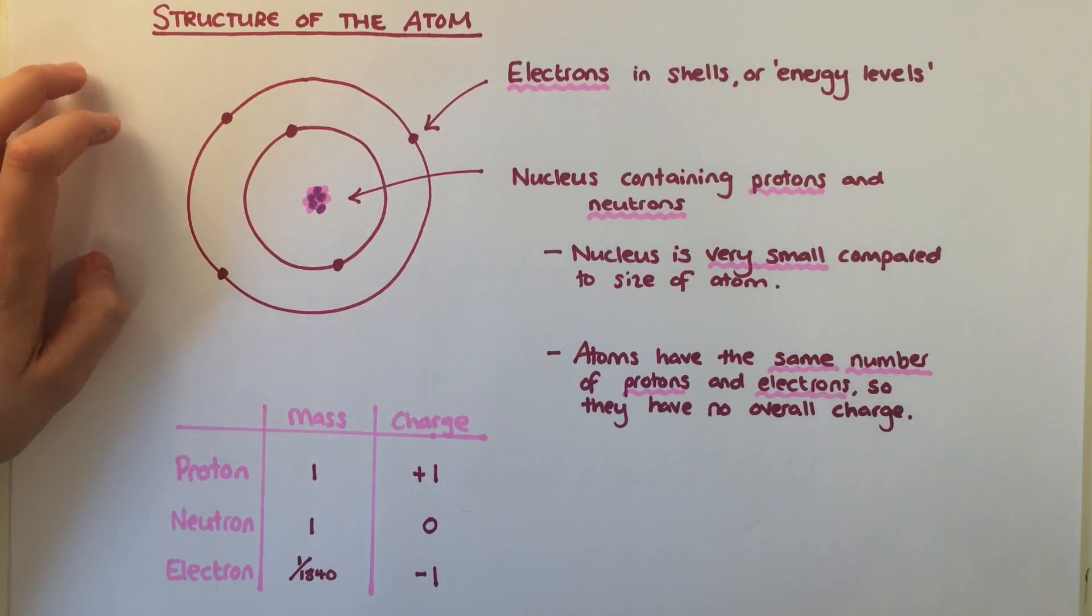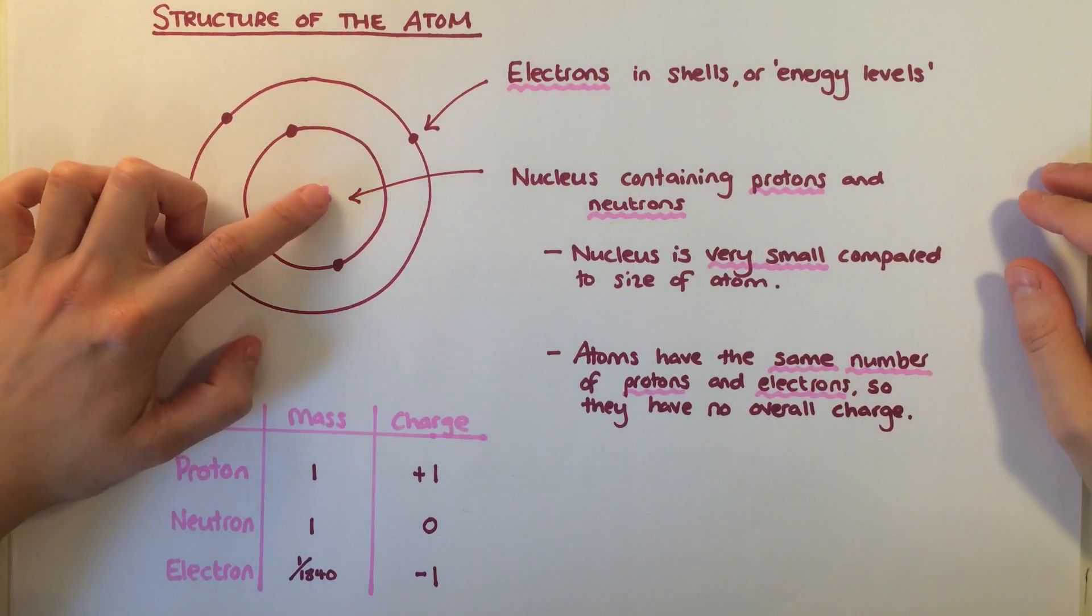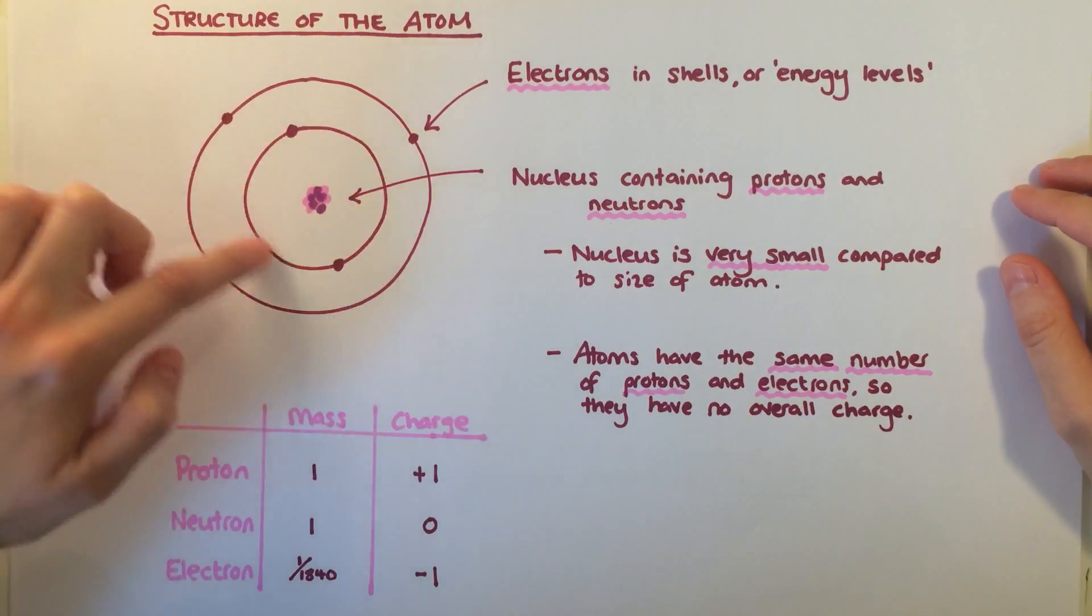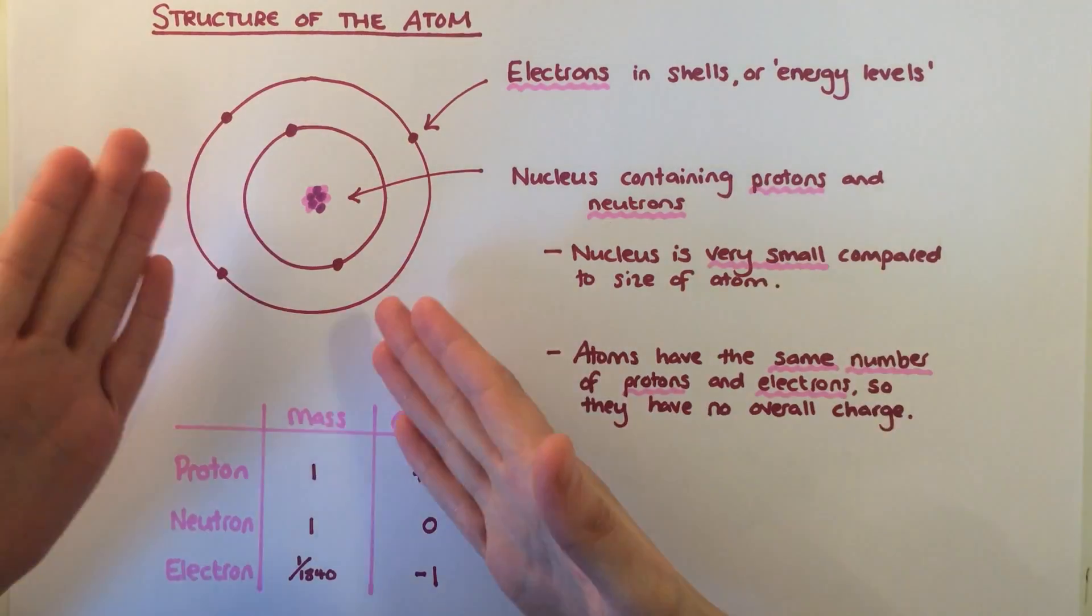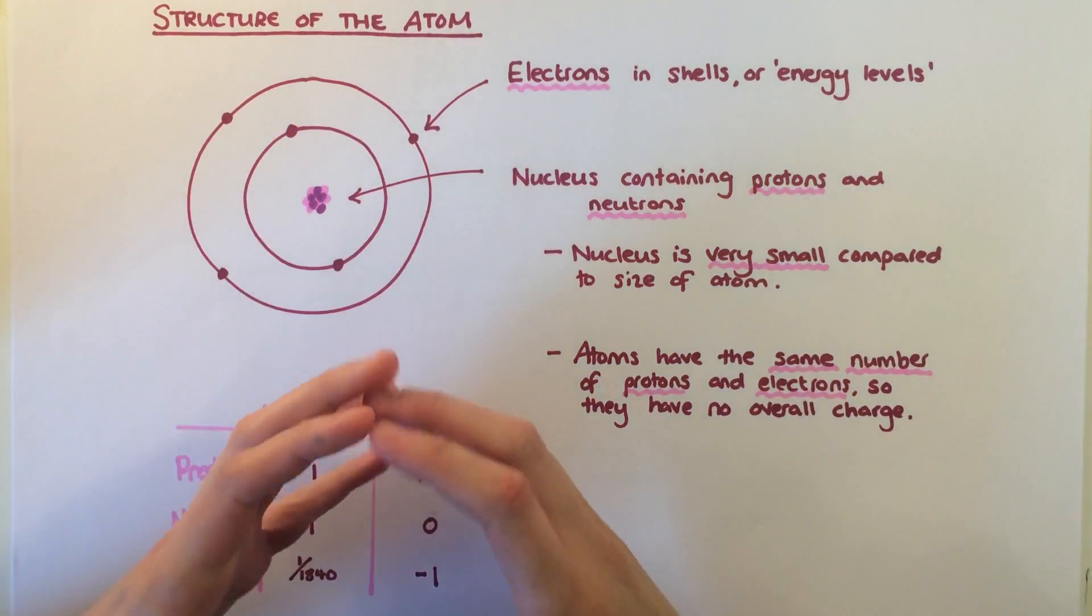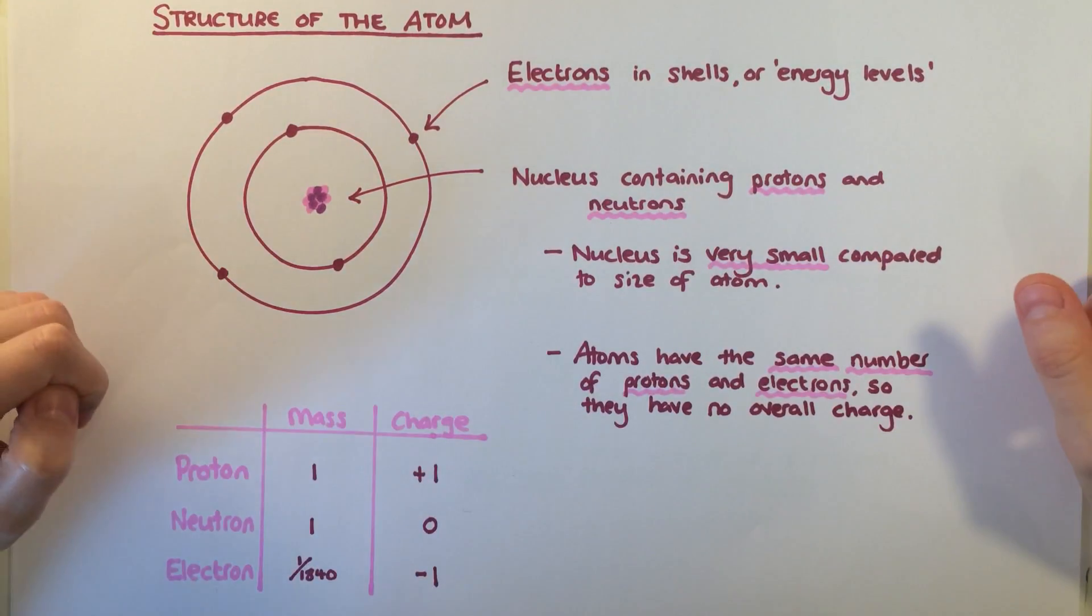An atom is made up of three different particles: protons and neutrons which are together in the central nucleus, and electrons which are in shells or energy levels around the outside. This diagram is not drawn to scale. In fact, the nucleus is absolutely tiny compared to the size of the whole atom.